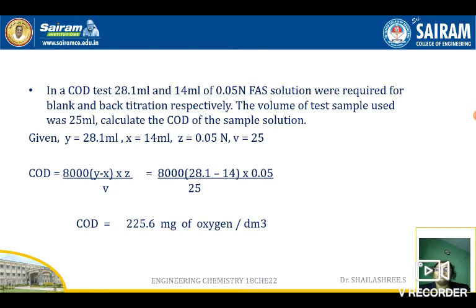More direct sums will be given in the question paper: blank titration value, back titration value, normality of FAS, and volume of wastewater sample are all given. Substitute all values in the formula and you will get the milligrams of oxygen required for oxidizing both organic and inorganic impurities — that is the COD. This is the end of this chapter. We will be meeting with a new topic shortly. Take care, bye-bye.